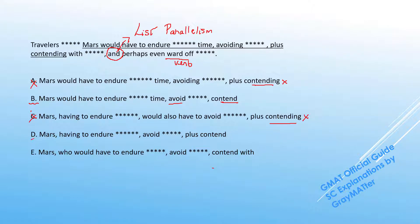If we take a look at D, the 'would have' is actually changed to 'having to endure'. This construction is a present participle modifier, and this is enclosed between two commas. We know that generally modifiers within commas are not really essential parts of the sentence. This is just adding extra information about the travelers. So the actual sentence becomes travelers to Mars avoid, plus contend, and even ward off.